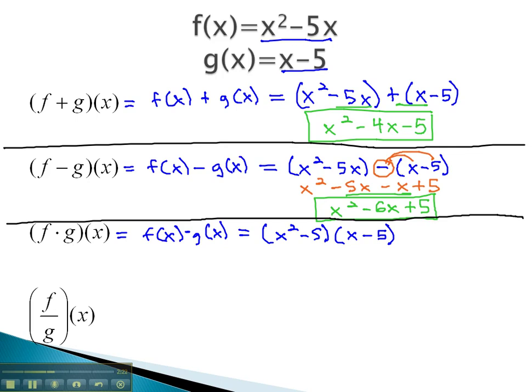As you recall, when we multiply these together, we can FOIL, giving us x cubed minus 5x squared minus 5x squared minus 5x plus 25. There are no like terms, so this expression is simplified and our final solution.